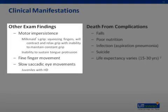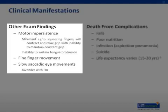Another finding in Huntington's disease is motor impersistence, which is the inability to maintain a voluntary muscle contraction at a constant level. Examples include milkmaid's grip, described as squeezing fingers with alternating contraction and relaxation of grip with inability to maintain a constant grip. Other findings include issues with fine finger movements, and most notably in patients with juvenile Huntington's, slowed saccadic eye movements that are usually prominent, with the need to turn the head briskly to look to one side being characteristic.